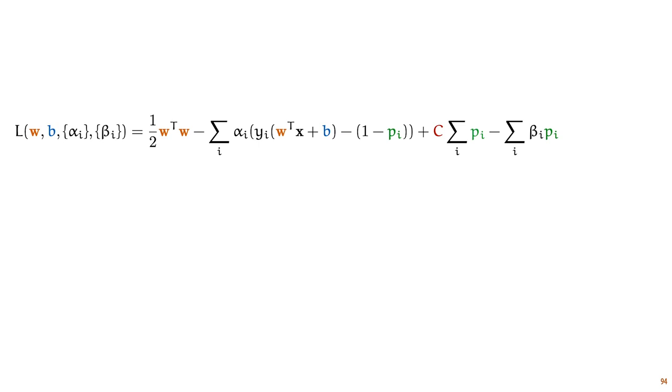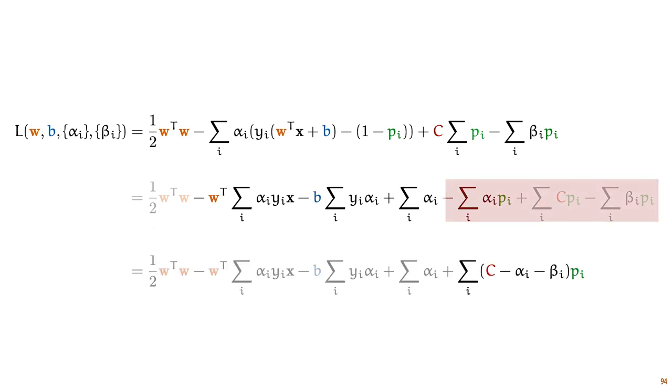This is just the objective function with the KKT terms for the first constraint inserted here and the KKT terms for the second constraint inserted here. We can then take this L function and rewrite it to help us down the line. The first thing we do is to start with this second term and multiply out everything we see inside the brackets.